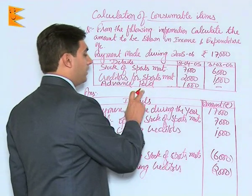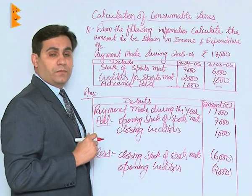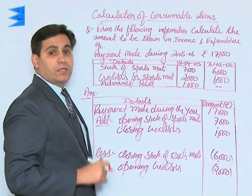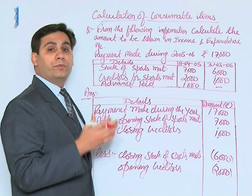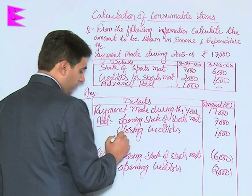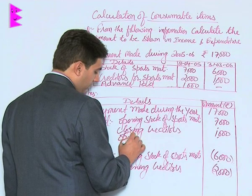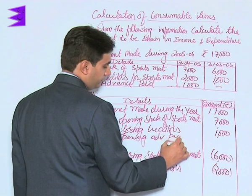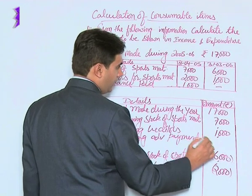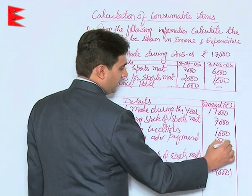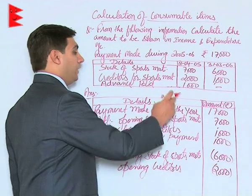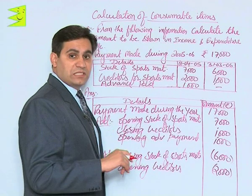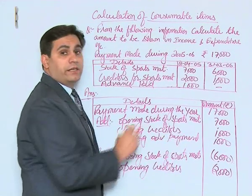Advance paid at the beginning means that in the previous year an advance of 1,000 rupees was paid. Obviously that amount would be utilized in this year, so it belongs to this year — add opening advance payment: 1,000. In this case there is no closing advance payment, but had it been there, using the vice versa effect, it should be taken as a deduction.